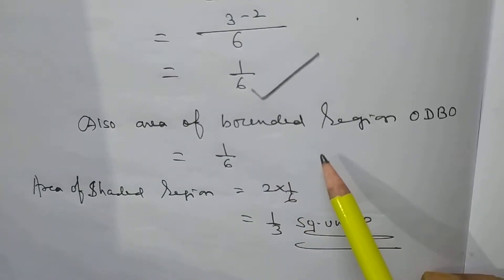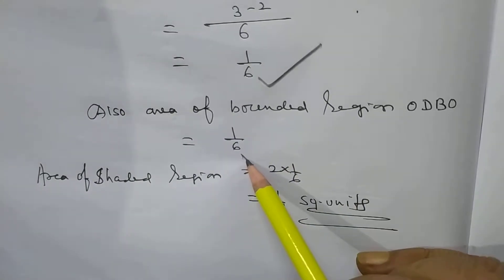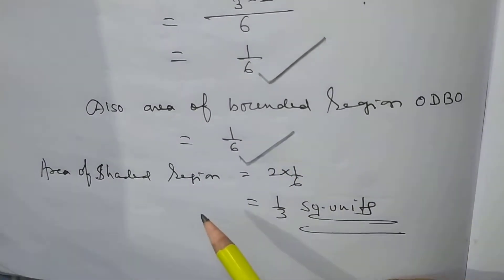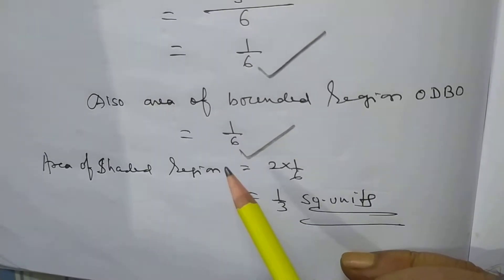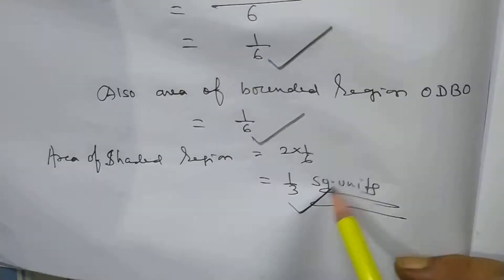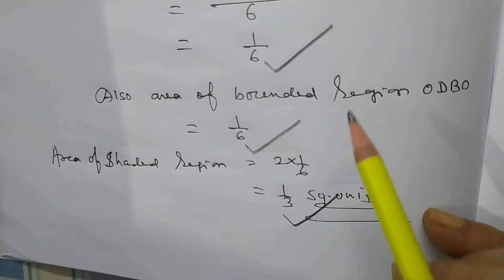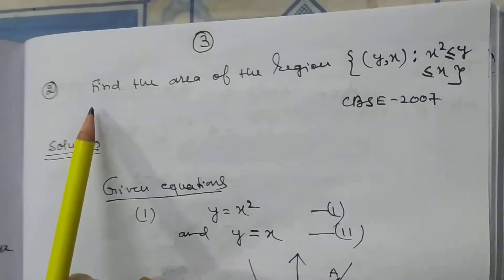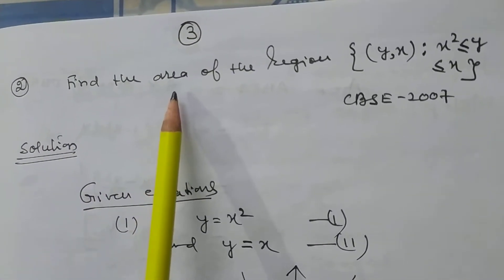Also, the area of bounded region ODBO is equal to 1/6. Therefore, the area of the shaded region is 2 × 1/6 = 1/3 square units. Now I want to discuss problem number 2.